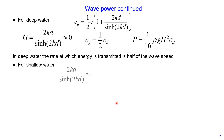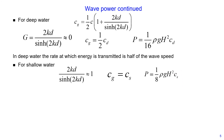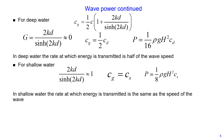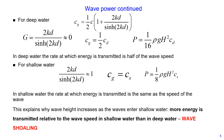For shallow water, parameter G is approximately equal to 1. Therefore, group velocity equals the wave speed for shallow water, and the wave power for shallow water equals 1/8 multiplied by specific weight, multiplied by wave height squared, multiplied by wave speed for shallow water. In shallow water, the rate at which energy is transmitted equals the wave speed. This explains why wave height increases as waves enter shallow water — more energy is transmitted relative to wave speed in shallow water than in deep water, which is called wave shoaling.